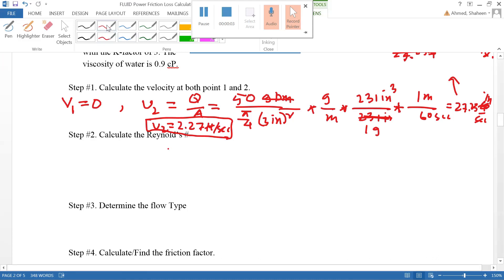Friction loss calculation step number two is the Reynolds number calculation. You have to look for the given information, and based on that, use the Reynolds number equation that's suitable for this particular situation.